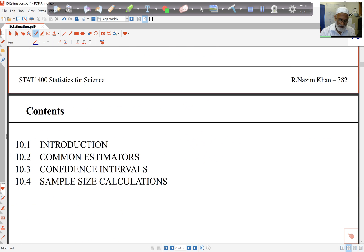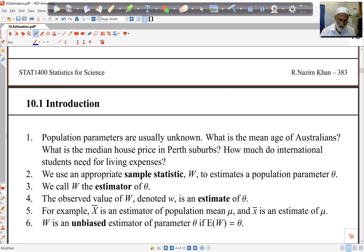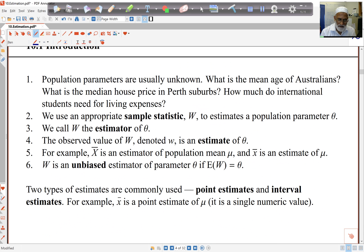So the basic idea: population parameters are usually unknown because they depend on the whole population. For example, if I wanted the mean age of Australians, I've got to measure the age or ask for the age of every Australian.